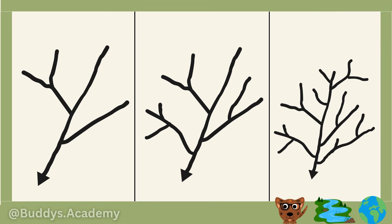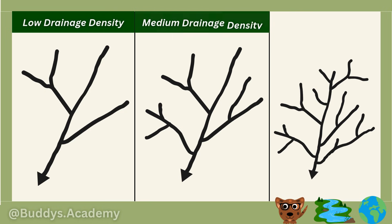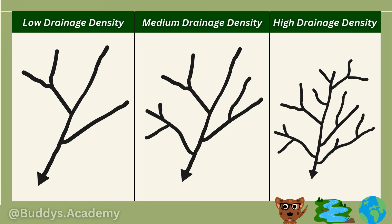As you can see we have three different types of drainage density: low, medium, and high. If we take a look at the diagram on the left, that's going to represent the low drainage density. This drainage pattern is just going to have a few streams in a large area, and water is not going to flow all over the place — it's mostly going to soak into the ground.